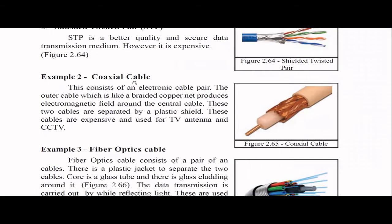Then we have coaxial cable, which has a pair of electronic cables. There is an outer cable and a central cable separated by a plastic shield. The outer cable produces an electromagnetic field around the central cable. Coaxial cables are a bit expensive and are typically used in TV antennas and CCTV cameras.